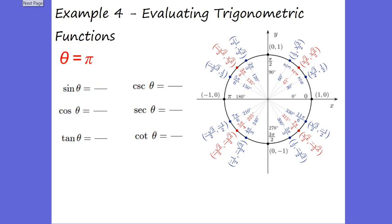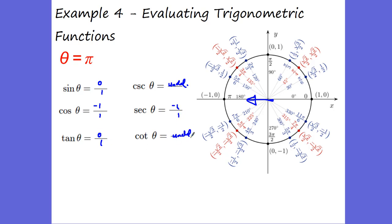One more example: our angle is pi. Pi is right here. Sine of pi is zero over one. Cosine of pi is negative one over one. Tangent is zero over one divided by negative one — which is zero. Cosecant would be one over zero — undefined. Secant is one over negative one, which is negative one. Cotangent is negative one over zero — undefined.